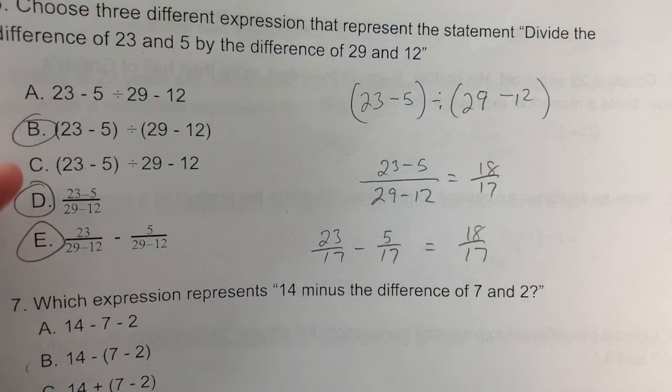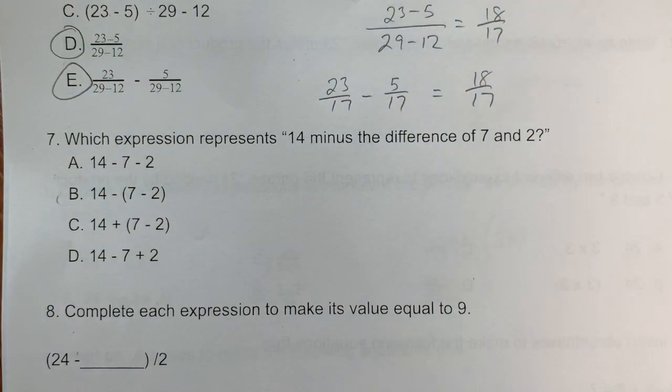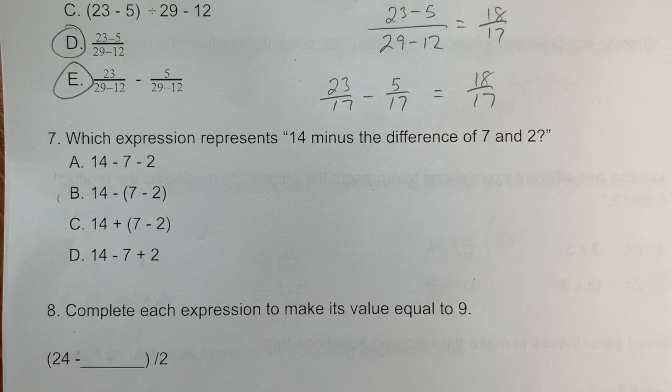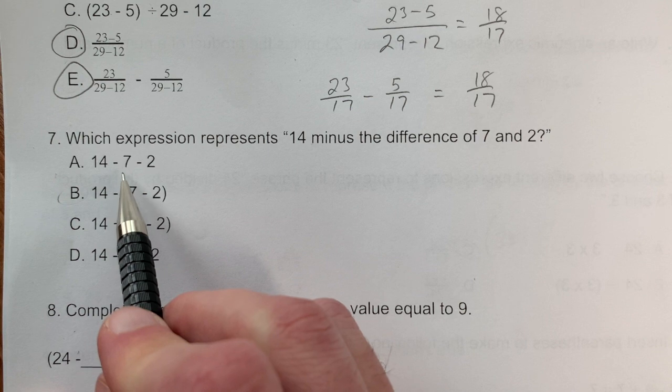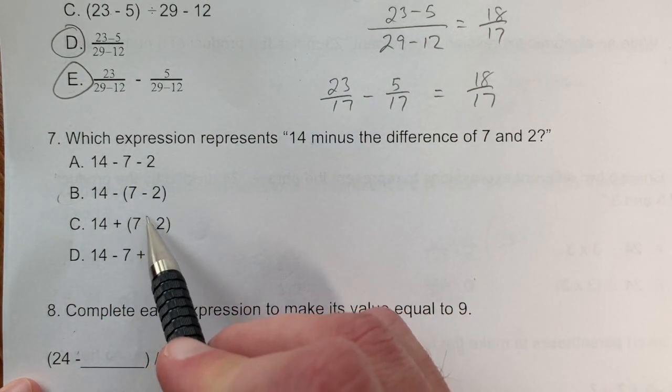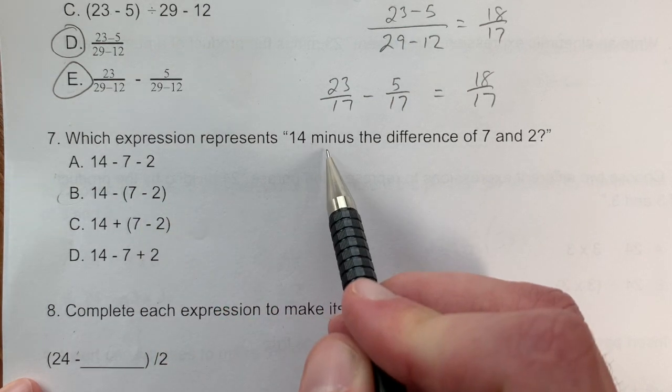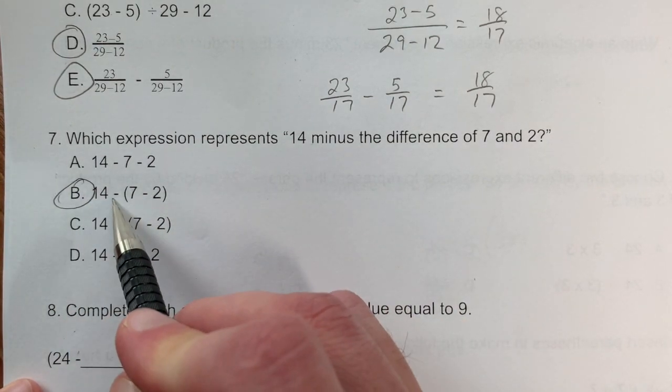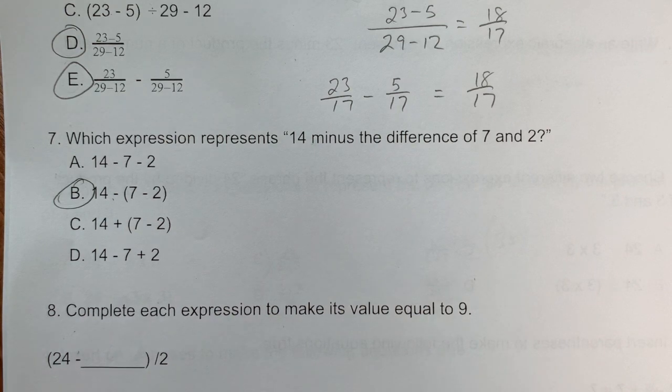Problem 7: Which expression represents '14 minus the difference of 7 and 2?' It doesn't say 14 minus 7, it says 14 minus the difference. I need to find the difference first. Only two options show the difference calculated first, and the correct answer is 14 - (7 - 2).